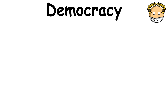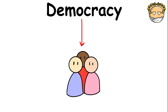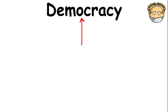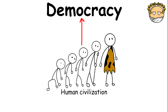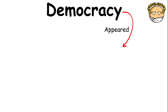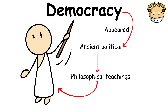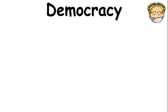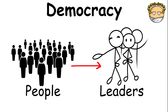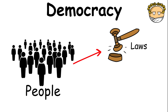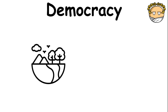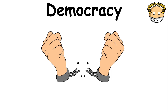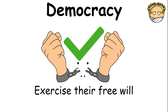A democracy is when a country believes that the citizens are the supreme rulers of the nation. Democracy is as old as human civilization itself, but first appeared in the ancient political and philosophical teachings of the people of Athens. In a democracy, the people are the ones who determine the leaders and the laws of the land through a majority vote. It also provides an environment wherein fundamental human rights are respected and the people are allowed to exercise their free will.